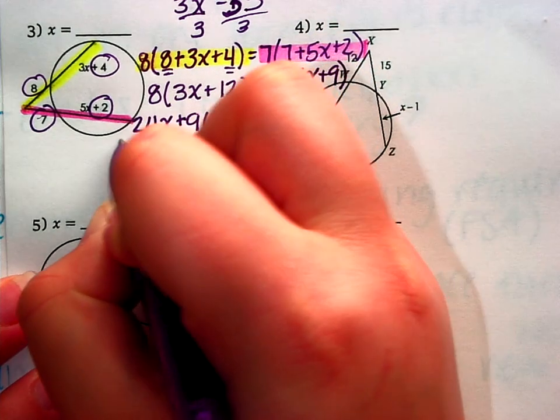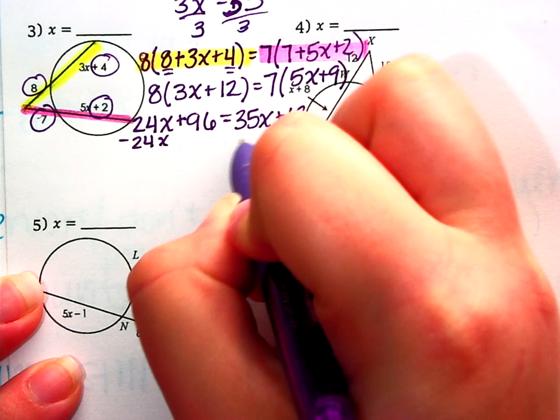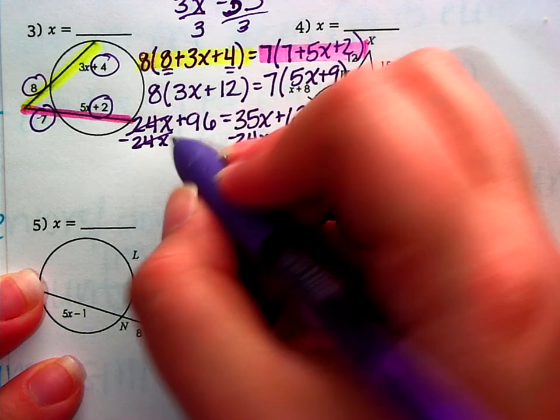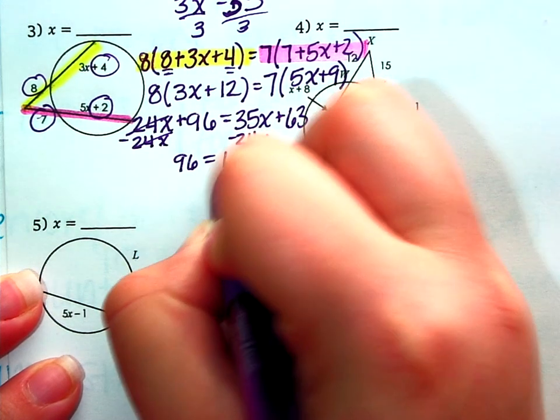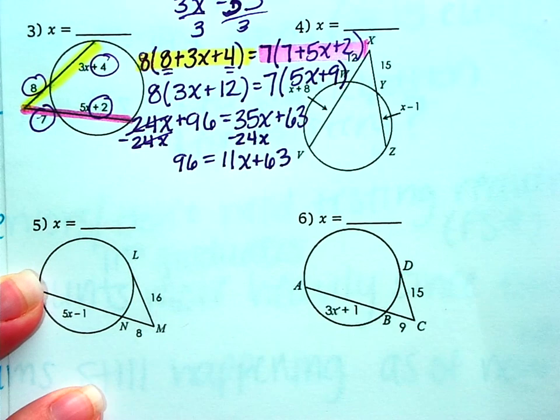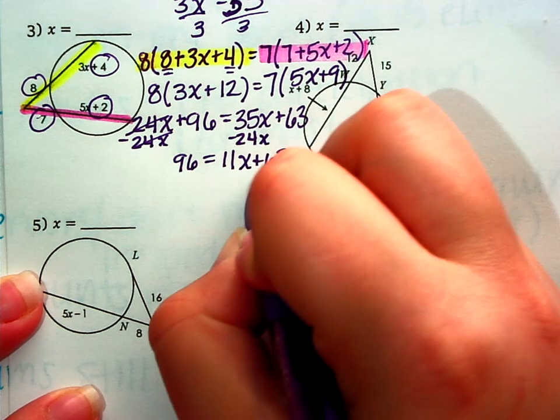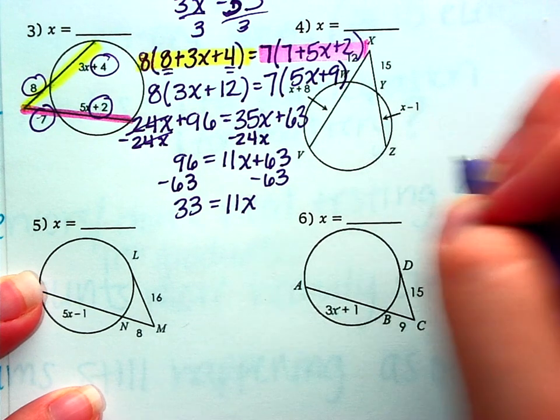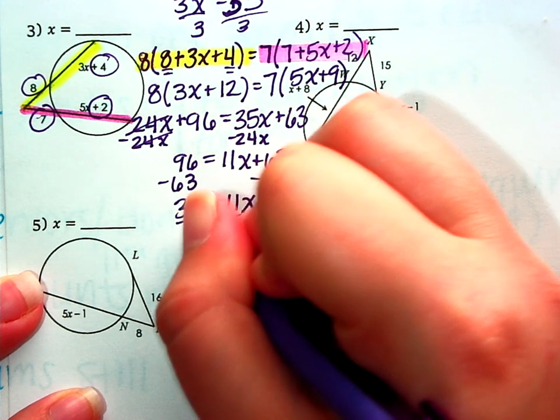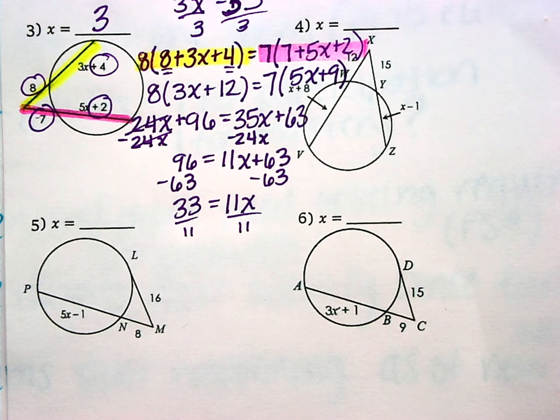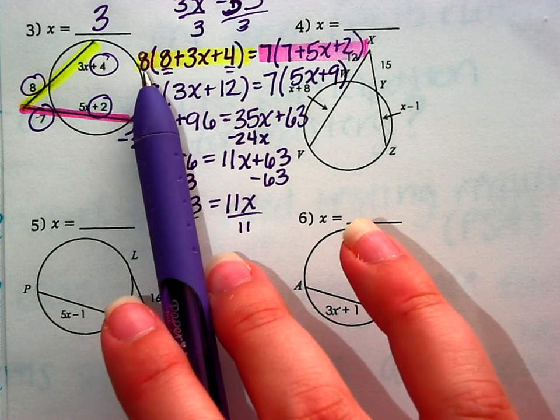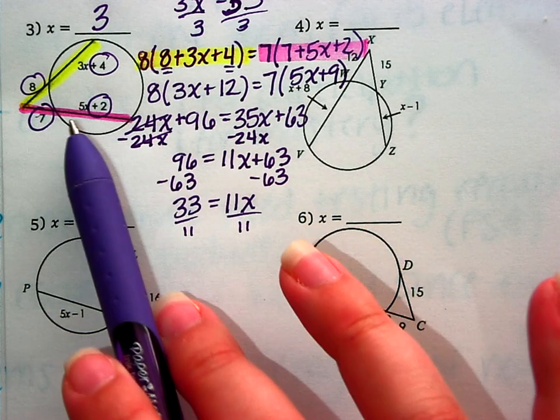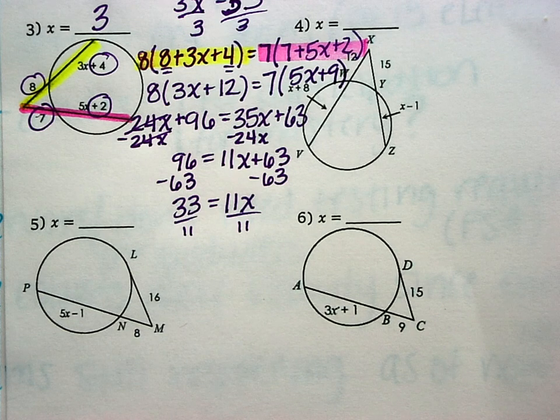Now we'll solve for x. I like to move the smaller x over. So I'll subtract the 24x from the 35x to avoid negatives. So I'll bring down that 96 equals 11x plus 63. Minus the 63 over and we get 33 again. This time it's 11x. So divide by 11 and x is 3. So that's all algebra. The geometry is understanding that you take the outside piece, multiply it by both of the pieces, add it together for each secant. Number 4 will be solved the same way.